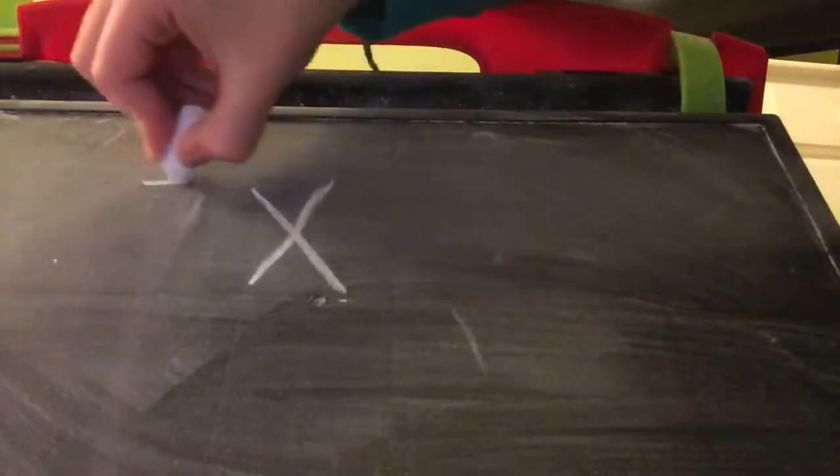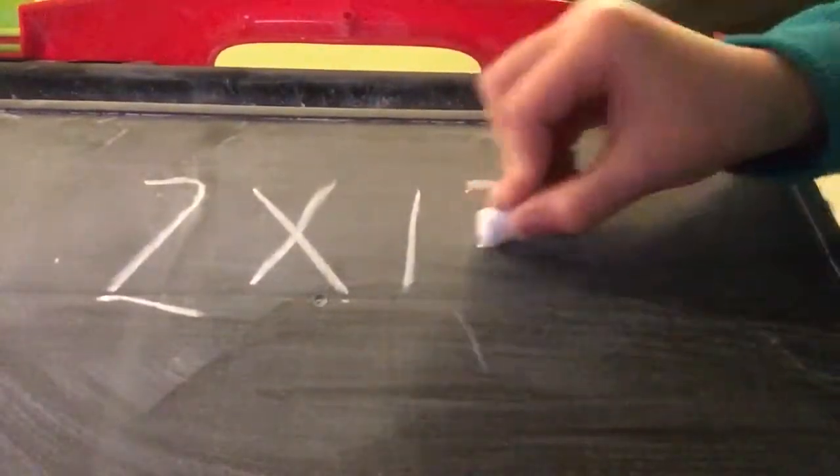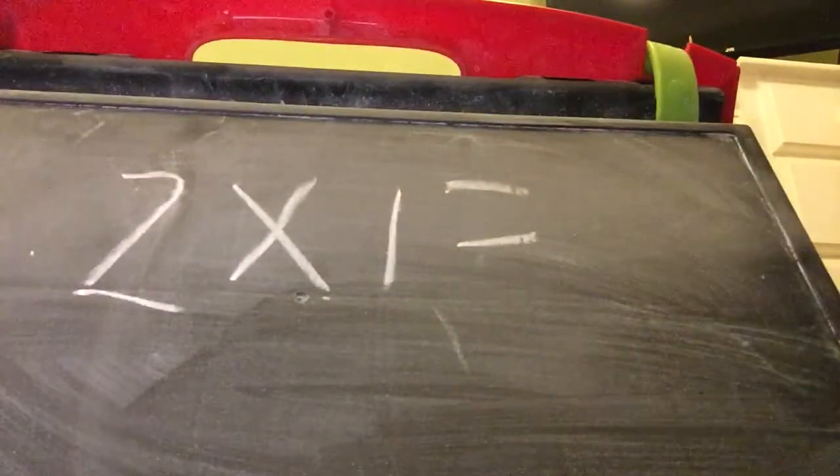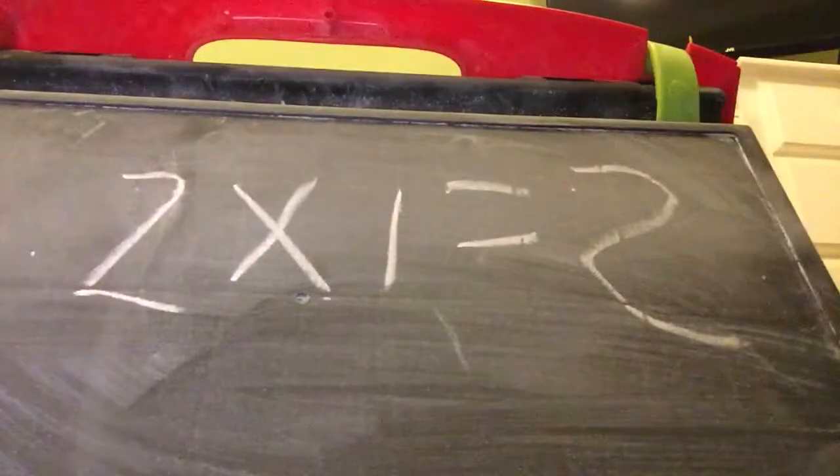And you guys thought that one would be hard! Now let's do the twos, which is a little bit more tricky. I'm learning twos, not ones. Two times one equals... two. We counted by that one time.